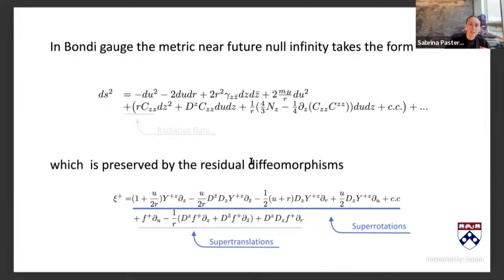Even the first proofs of the soft theorem–Ward identity equivalence use amplitude harmonic gauge and in the asymptotic analysis BMS gauge. Things all work out because if you express everything in terms of free data they're equivalent, but it is slightly strange that the symmetry group seems to come from the gauge choice. An alternative perspective, which is also nice to see what's different about the flat limit, is to just look at the boundary.